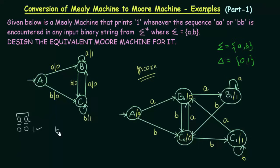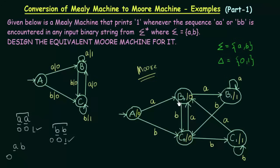For input string BB: starting at A (output 0), on first input B we go to C0 (output 0). On the next input B, C0 goes to C1, which gives output 1. For input string AB: A gives 0, then goes to B0 (output 0), then on input B goes to C0 (output 0). No 1s are printed because no AA or BB sequence was encountered.